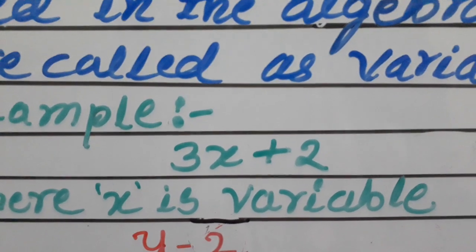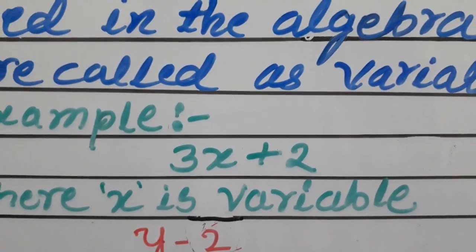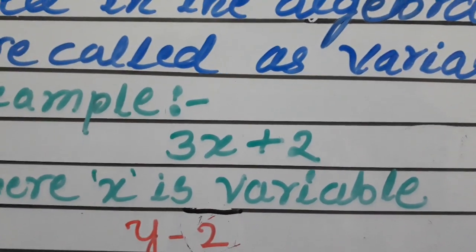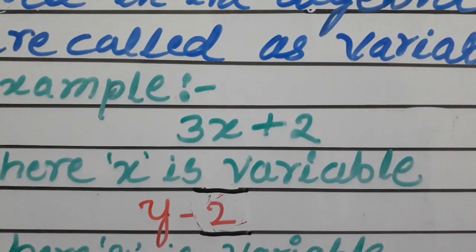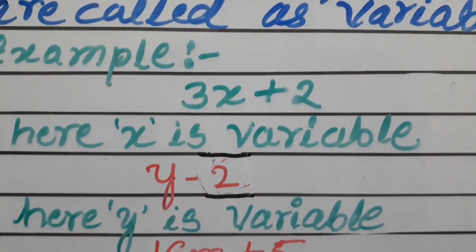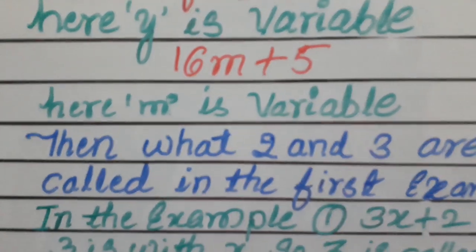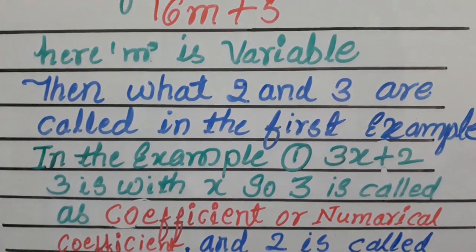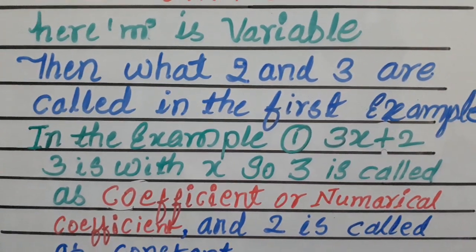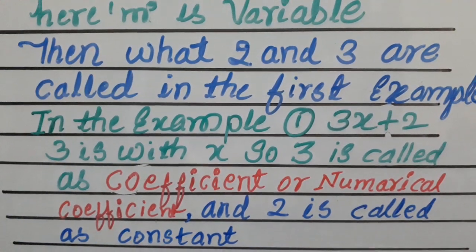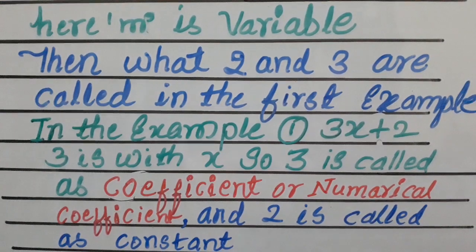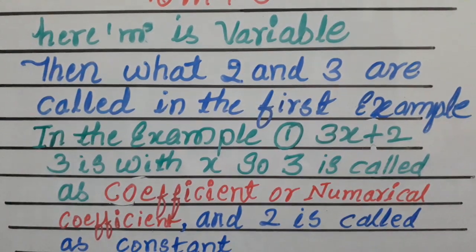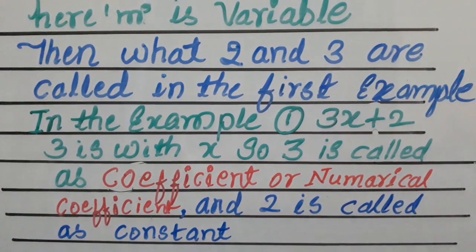In the expression 3x plus 2, other than the variable, numbers are also there — 3 and 2. What are 3 and 2 called? In the algebraic expression, 3 is called the coefficient. The coefficient is also called the numerical coefficient. The numerical coefficient is the number present with the variable — so in 3x, the 3 is present with X, and therefore 3 is the coefficient.